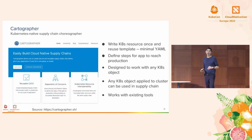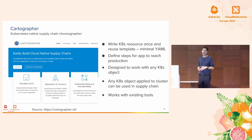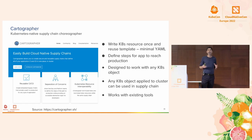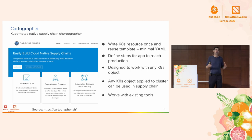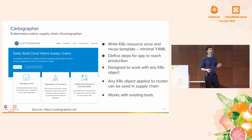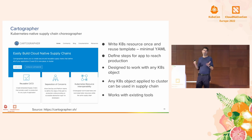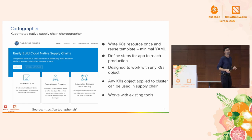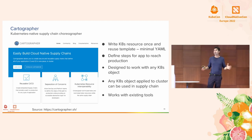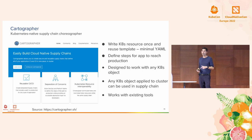Cartographer is a Kubernetes-native supply chain. It's designed to be very efficient. You write your Kubernetes resources once and then reuse them as templates, which minimizes the YAML developers and operators need to use, getting us away from that wall of YAML burden. It defines all the steps for an app to reach the path to production, making it great at automating best practices and a shift-left methodology. It's designed to work with any Kubernetes object and with existing tools like CI/CD pipelines.